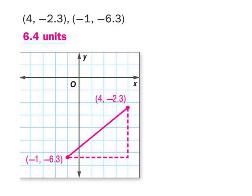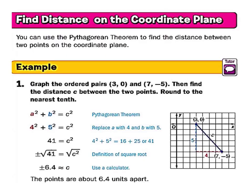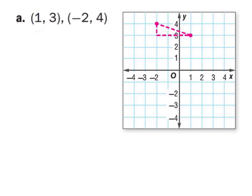The book puts this into decimal form and labels it in units, which is fine — you could also label it as the square root of 41 units. This next example comes with a graph, so maybe you want to use the graph, or maybe you just want to find the difference between the x's and y's and find the square root. Take a second and see if you can do this one.